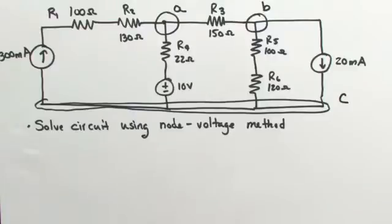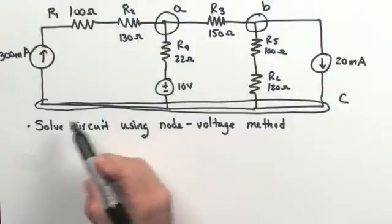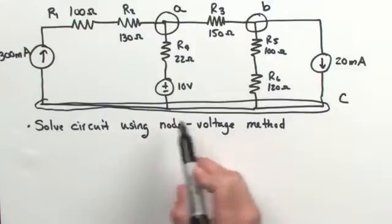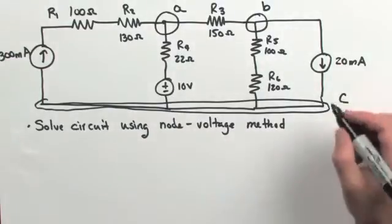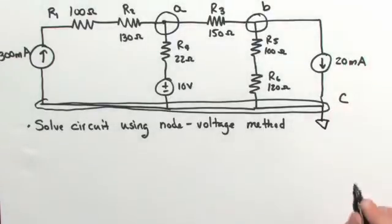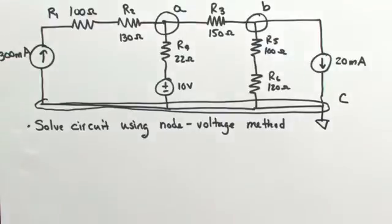The next thing we need to do in the node voltage method is to designate one of the essential nodes as our zero voltage reference point. This is an arbitrary assignment, but I suggest you select the node that has the most connections associated with it, which in this case is node C. So I'm going to denote node C as our zero voltage reference point.